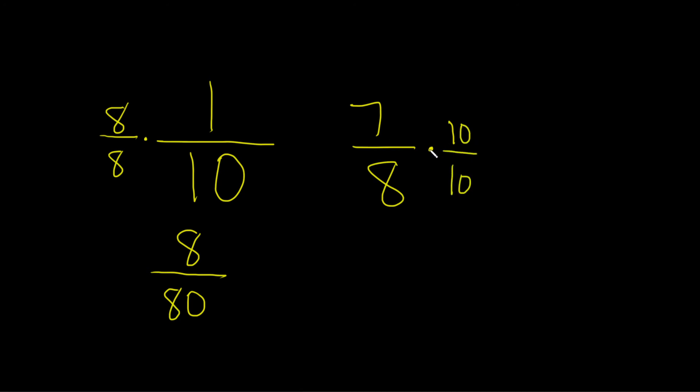So same thing, you just multiply across. 7 times 10 is 70. 8 times 10 is 80.